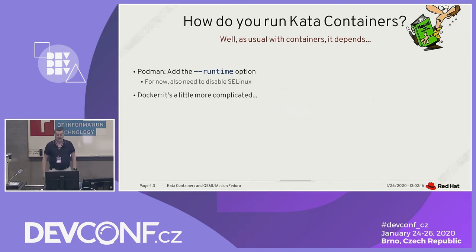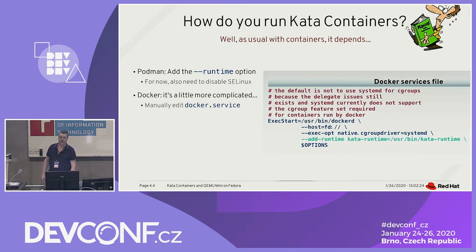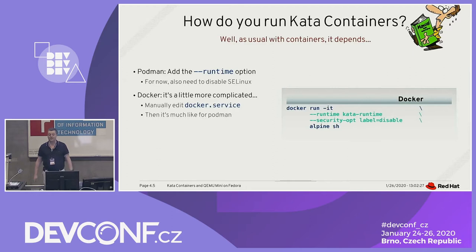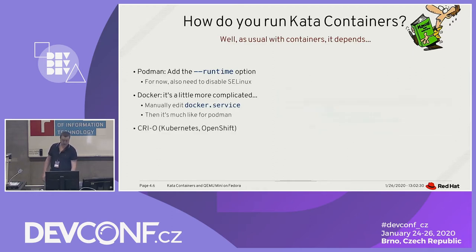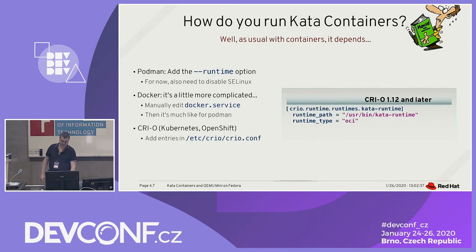For Docker, it's slightly more complicated because you need to first edit your Docker service file so that it knows about the new runtime. Then after that, it's pretty much like Podman. For CRI-O, you need to add an entry in your crio.conf, and that's how it knows about the runtime.